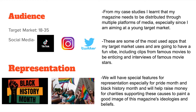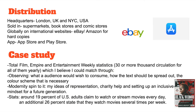We will have special features for representation, especially for Pride Month and Black History Month, and will help raise money for charities supporting these causes to paint a good image of this magazine's ideologies and beliefs. This magazine will have headquarters in London, UK and New York, USA, and will be widely sold throughout these two countries in supermarkets, bookstores and comic stores, but will also be available globally on international websites such as eBay and Amazon for hard copies, and there will be an online version through an app available on the App Store and Play Store.